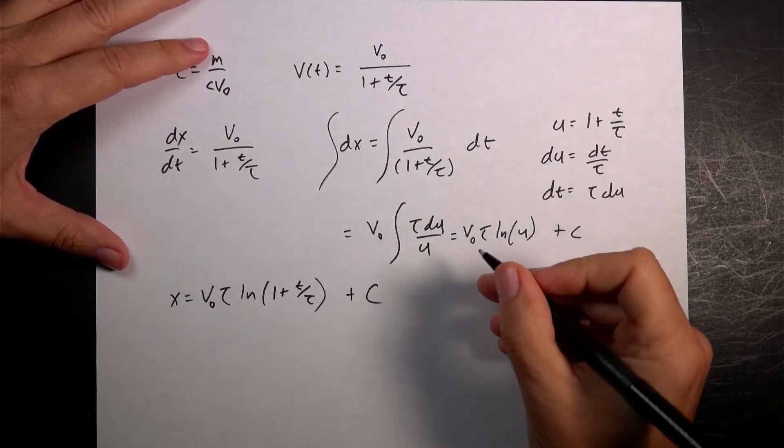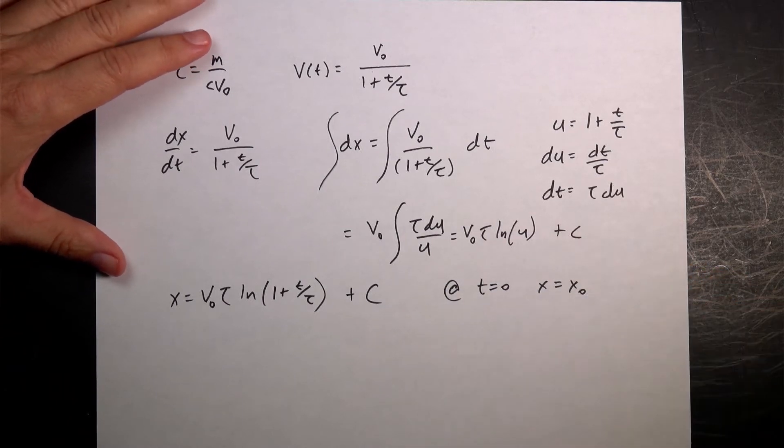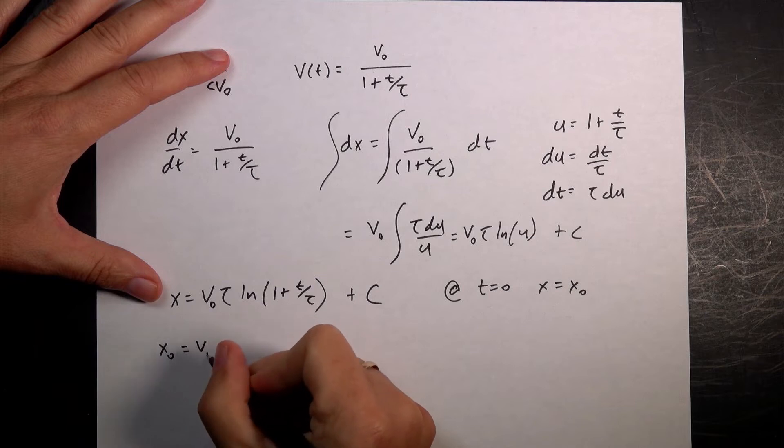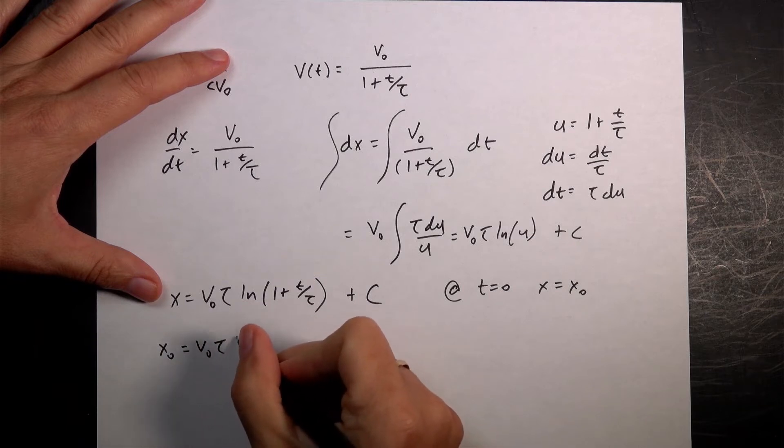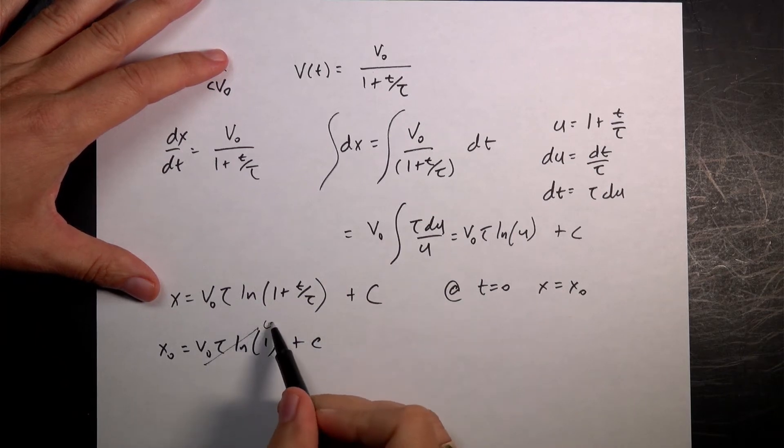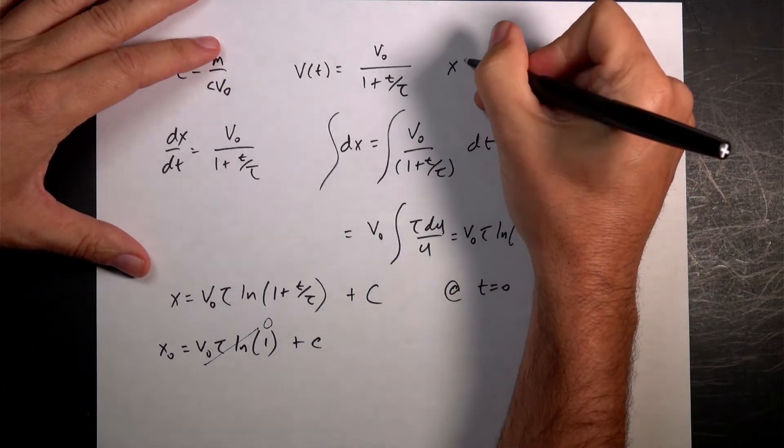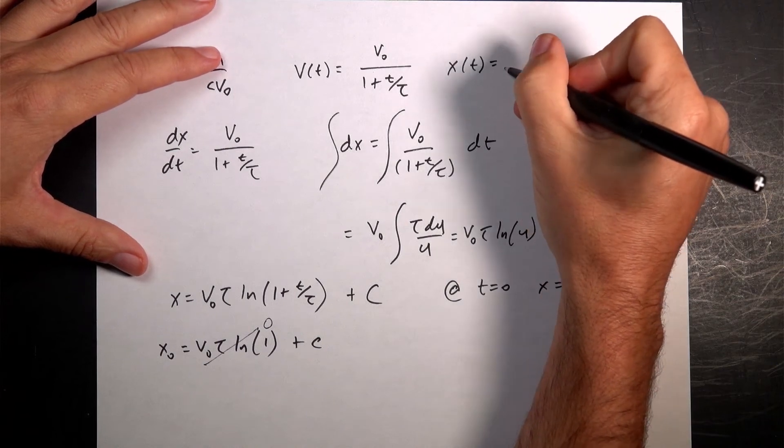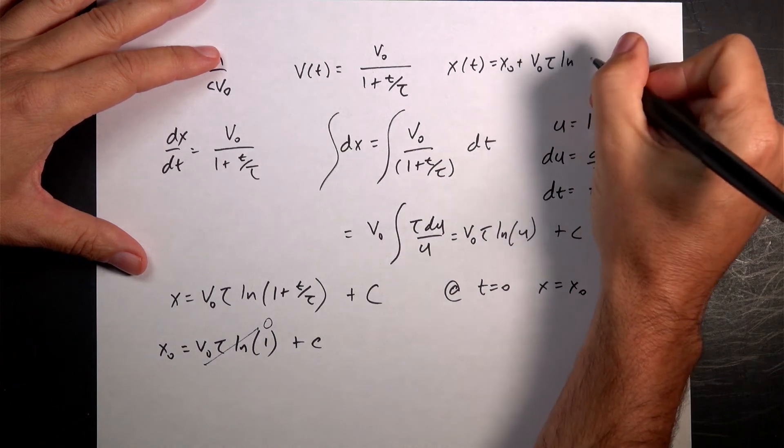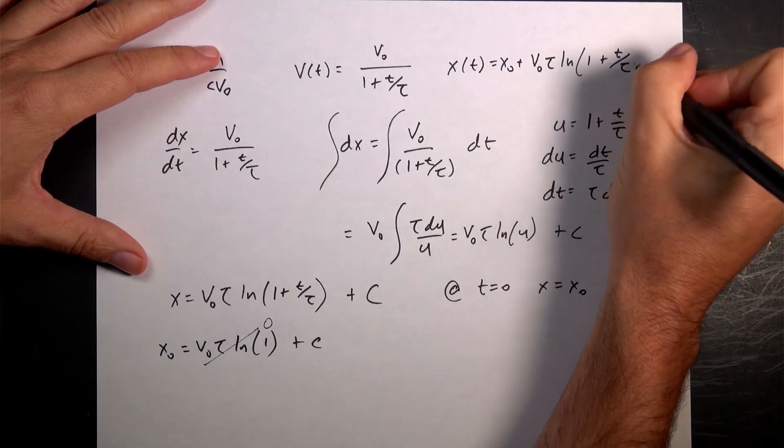So again, I can solve for the constant by saying at t equals 0, x is equal to x0. So I'm an initial position. So if I put in t equals 0, I get x0 equals v0 tau natural log of 1 plus 0, 1 plus c. So that's 0, natural log of 1 is 0. So I get c is x0. So now I have, let me put it up here, x as a function of time is x0 plus v0 tau natural log of 1 plus t over tau.